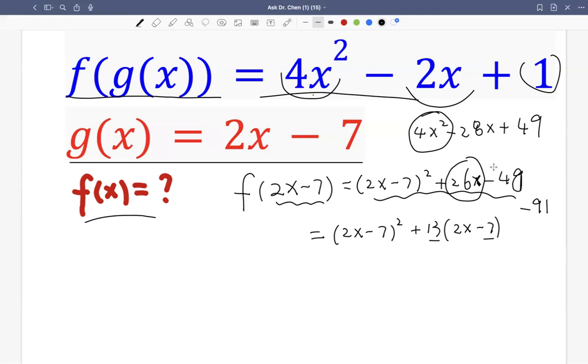But we only had negative 48 here. So we have to add back 43. Right? Because 13 times negative 7, that's negative 91. But we only have negative 48. So negative 91 plus 43 gives us that back negative 48.